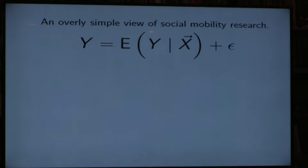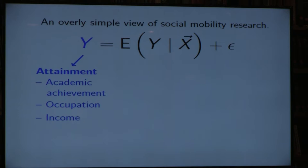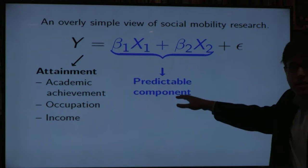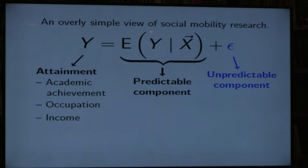I'm going to dramatically simplify an enormous field of sociological research. You can think of social mobility research as a model with some outcome we're interested in — sometimes called attainment — such as academic achievement, occupation, or income. There's a predictable component, written as the expected value of y given a vector of x, a vector of variables about a person. This is often written as a regression model: women tend to earn more than men, or people with more education earn more. These are the kinds of statements we usually make in mobility research, and we focus on this component. But there is another component — the unpredictable error terms — and we very rarely talk about them.